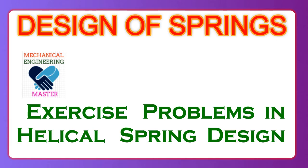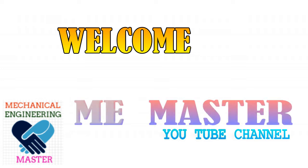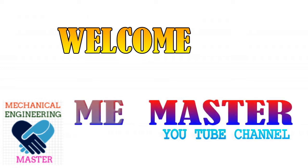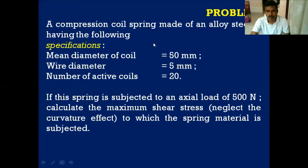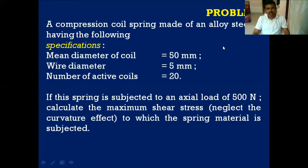Good morning friends. Just to go through the problem: a compression coil spring made of pearlite steel having the following specifications — mean diameter of coil is 50 mm, wire diameter is 5 mm, number of active coils is 20. The spring is subjected to an axial load of 500 Newtons. Calculate the maximum shear stress induced in the spring. It is given that we neglect the effect of curvature.